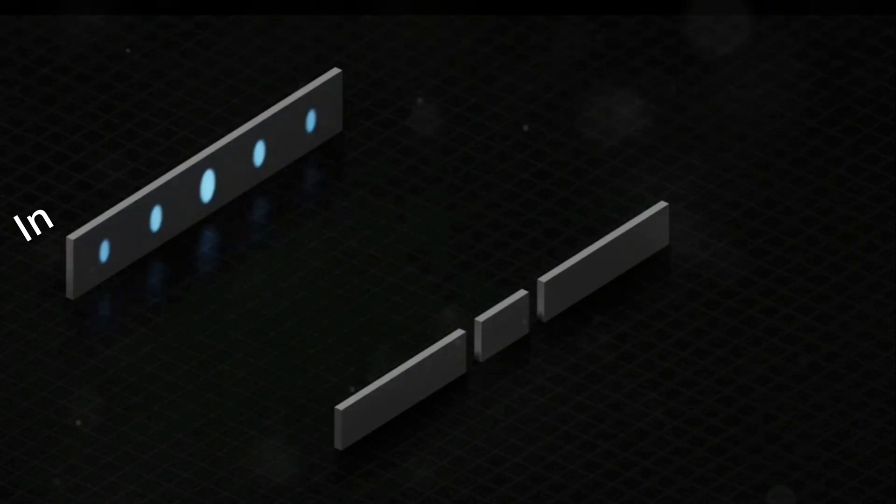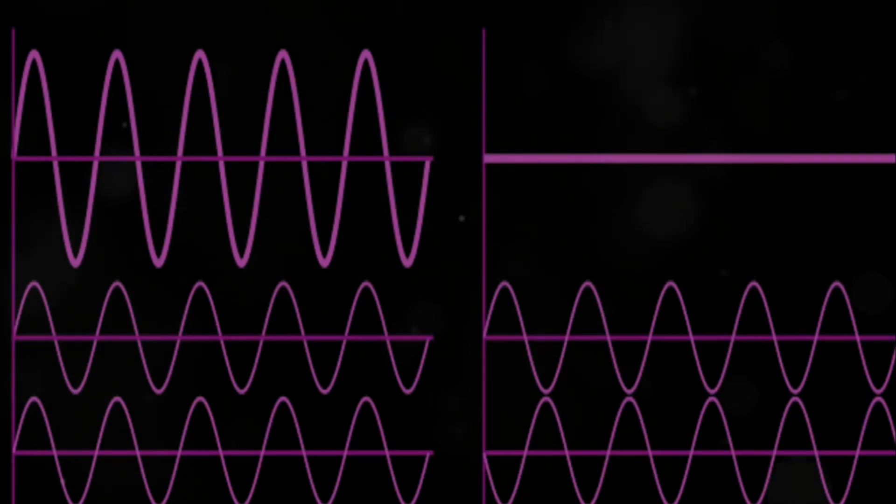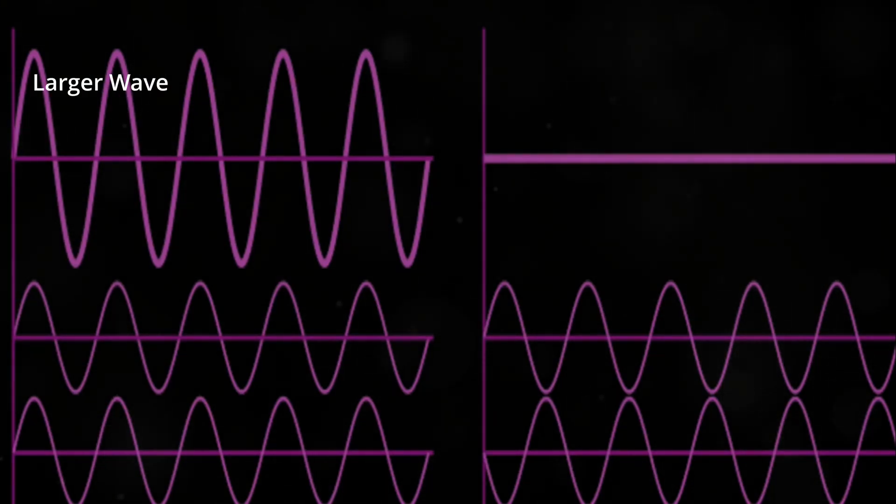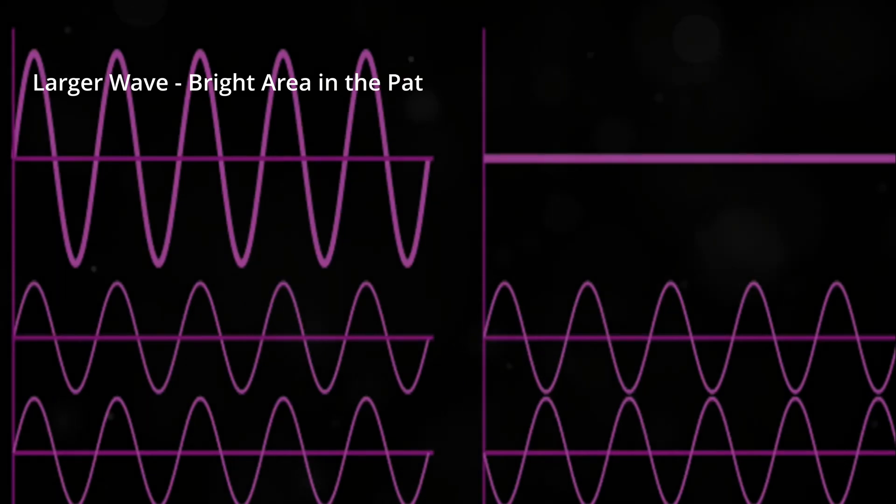This pattern is called an interference pattern, and it's a clear sign of waves. Think about those water ripples again. When two waves interact, their high points can combine to create a larger wave, similar to the bright areas in Young's pattern.